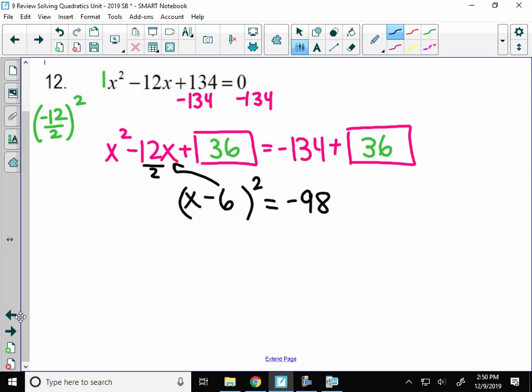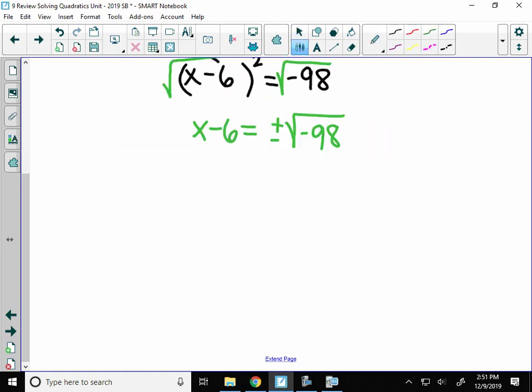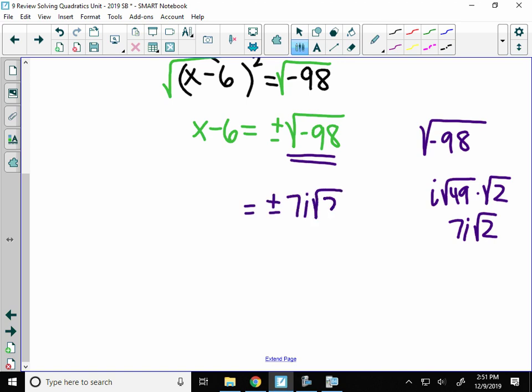All I have to do now is solve for x. I'm almost there. I'm going to take the square root of both sides and get x minus 6 equals. Now when you take this square root, you have to put a plus or minus. And I have the square root of negative 98. Now you should be able to look at the square root of negative 98 and say, oh, that has a perfect square in it. You know it's going to have an i because there's a negative. The square root of 98 would be the square root of 49 times the square root of 2. So that would be 7i radical 2.